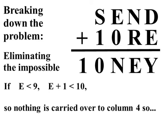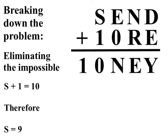If E is less than 9 that means E plus 1 is less than 10. So, nothing is carried over to column 4. So, we have S plus 1 equals 10. Therefore, S equals 9. Now, we're making some progress.